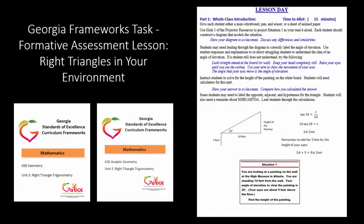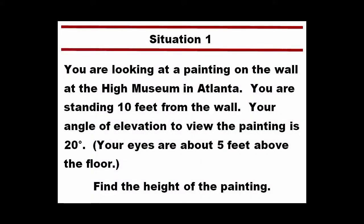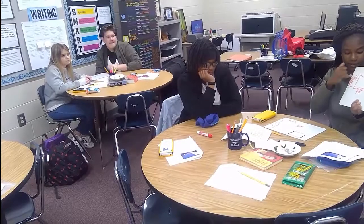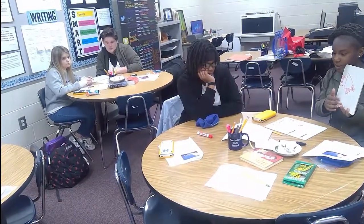In the Georgia Framework's task, Right Triangles in Your Environment, the whole class introduction includes the following situation before students begin working in homogeneous pairs determined by their pre-assessment data to match situations and diagrams. You are looking at a painting on the wall at the High Museum in Atlanta. You are standing 10 feet from the wall. Your angle of elevation to view the painting is 20 degrees. Your eyes are about 5 feet above the floor. Find the height of the painting. To highlight the importance of creating accurate and precise diagrams for solving geometric problems, these students were asked to draw a model of the situation only first. Then they shared their diagram and came to consensus about which diagram they would use to solve the problem.